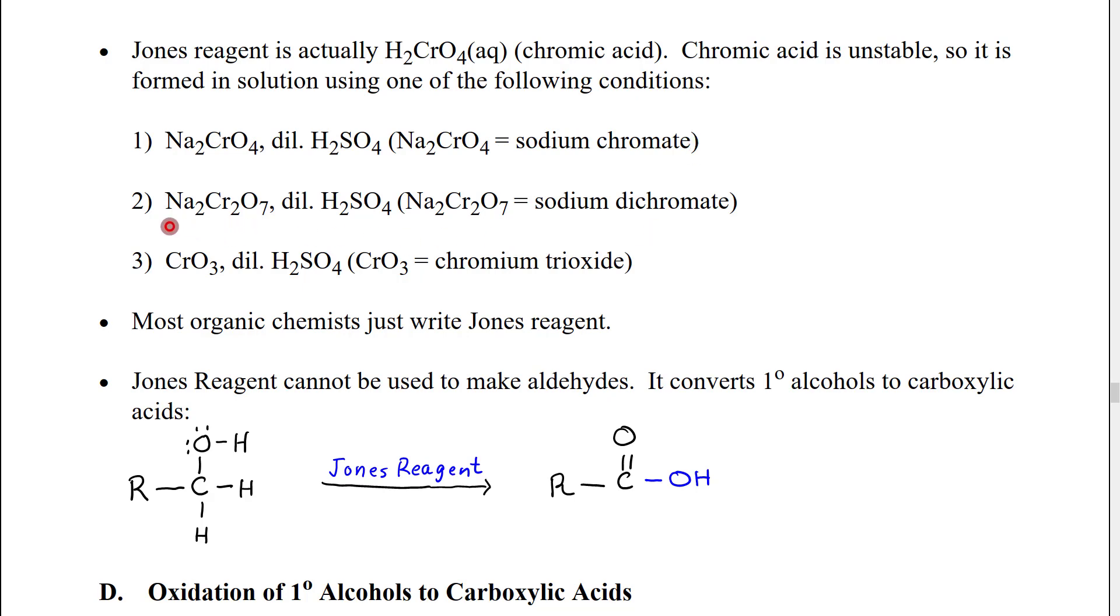Similarly we can use sodium dichromate. This is actually really commonly used. Again we mix that with sulfuric acid it breaks up the dichromate ion it protonates it and we get two molecules of chromic acid.